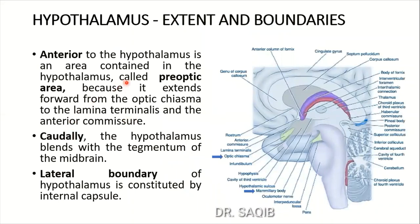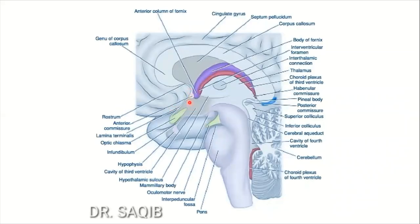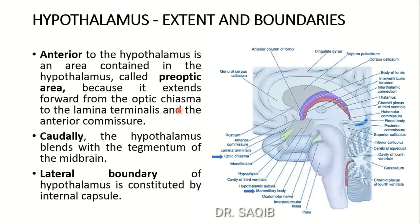We need to see the pre-optic area. Anterior to the hypothalamus is an area called the pre-optic area, because it extends forward from the optic chiasma to the lamina terminalis and the anterior commissure. This is the lamina terminalis and this is the anterior commissure. Up to this area is the extension of the hypothalamus, and this area is called the pre-optic area, included in the hypothalamus.